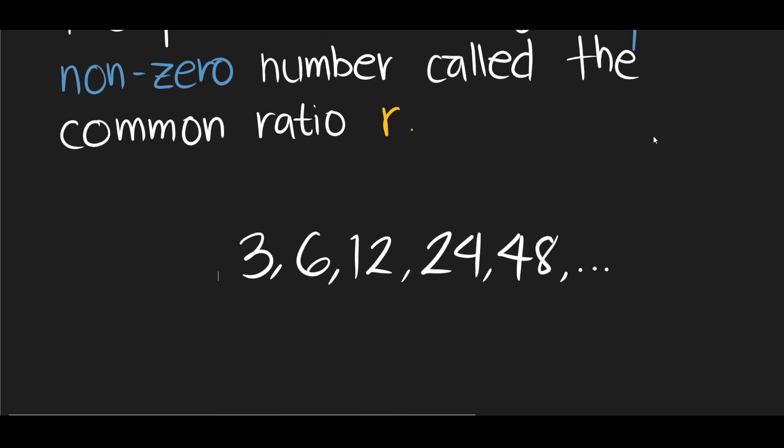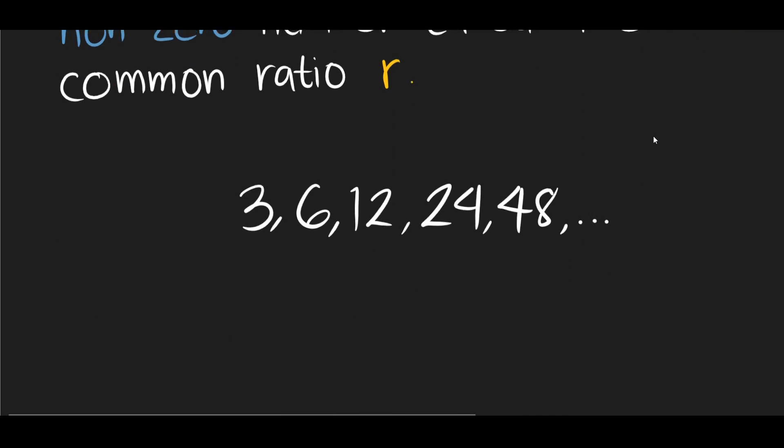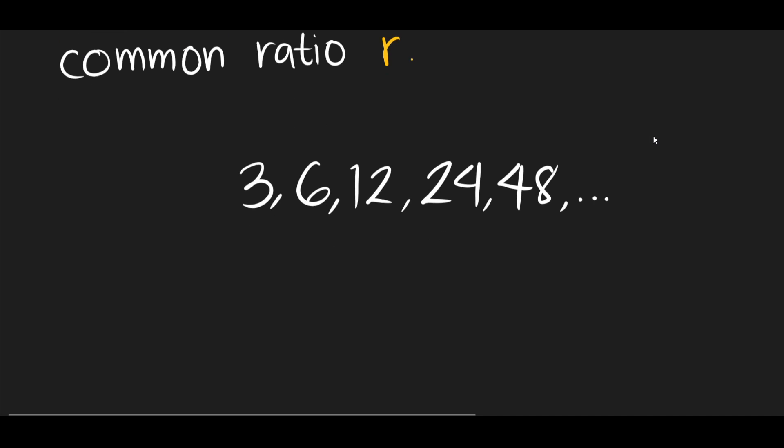Let's try to see an example here. So the second term is 6. What did we multiply 3 to get 6? That would be 2. So again, we multiply 2 to 6, we get 12. And then multiply 2 again, 24, multiply 2, 48, and so on. So this is a geometric sequence with a common ratio of 2.